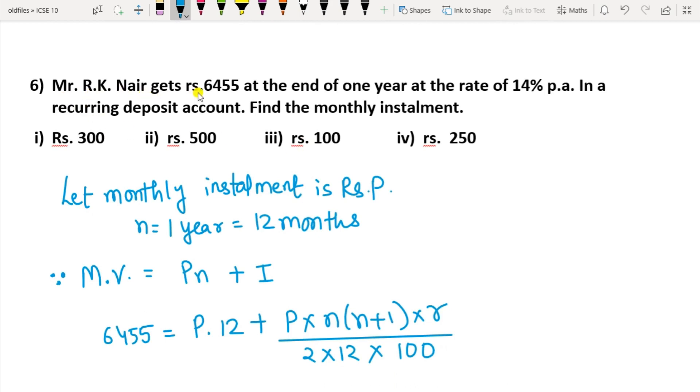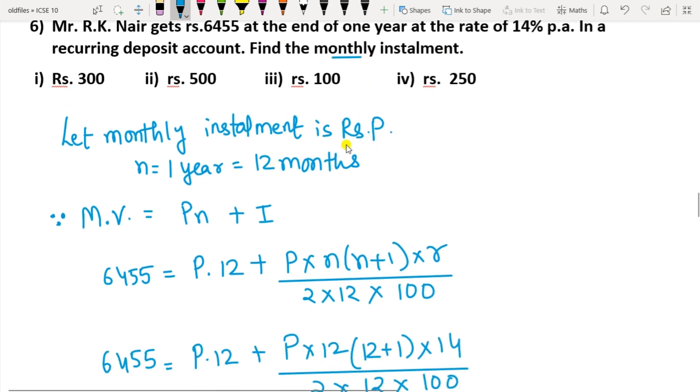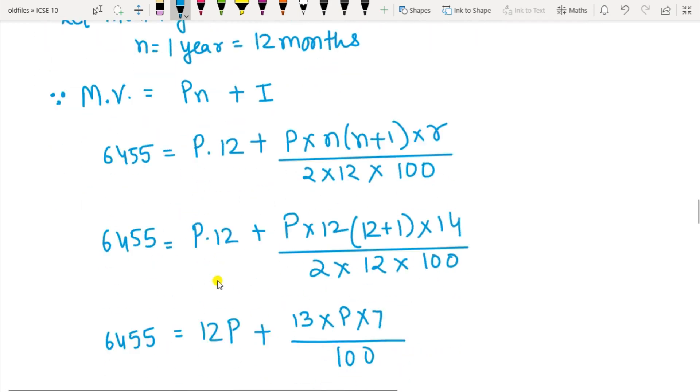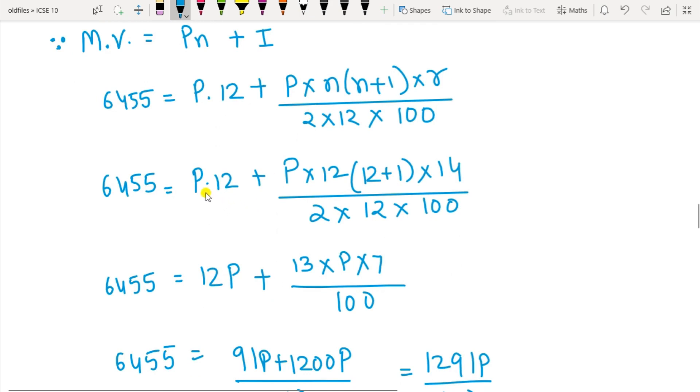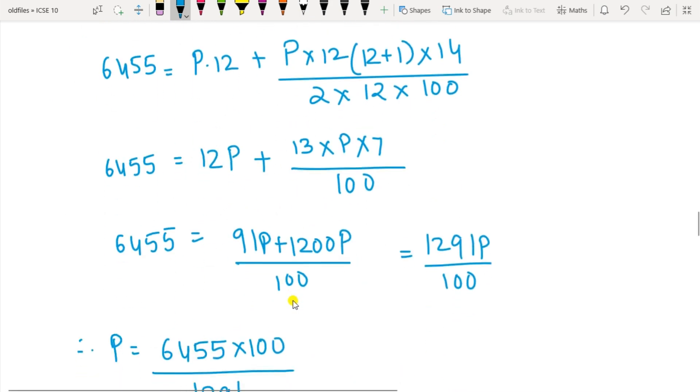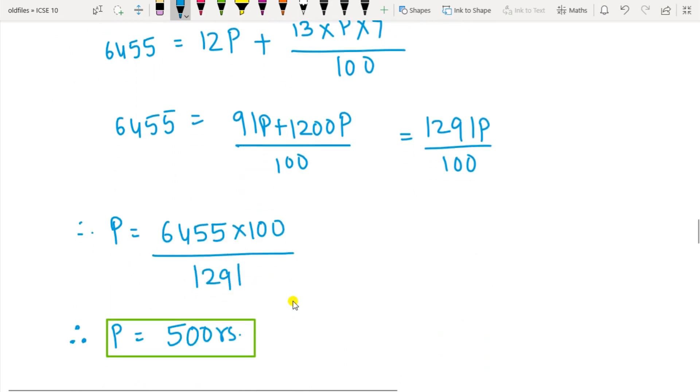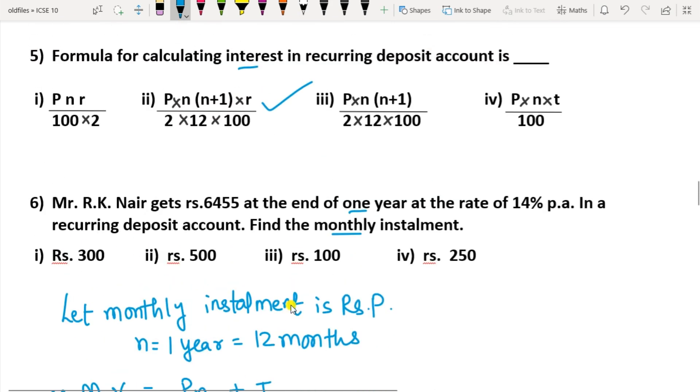Question 6: Mr. RK Nair gets Rs. 6,455 at the end of 1 year at the rate of 14% per annum in a recurring deposit account. Find the monthly installment. Monthly installment means P you have to find. Time is given as 1 year, so n is 1 year, convert into months. MV = Pn + I, substitute all the values, you have to find P here, write the formula for I also. Take the LCM and solve it and cross multiply. You get the value of P as 500 rupees. So option 2 in this case is the correct option.